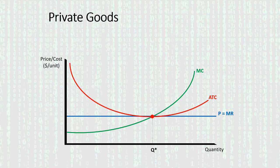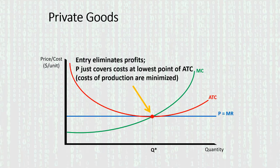That means profits get competed away, and all surplus goes to the consumers. Entry eliminates profits and costs of production are minimized, so it's efficient. This model is simplistic and does overgeneralize, but it's a good way to summarize what's going on in that competitive market system.